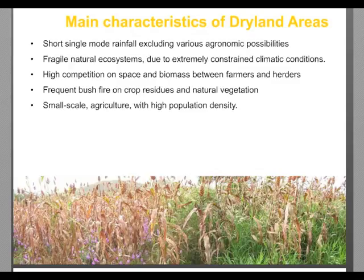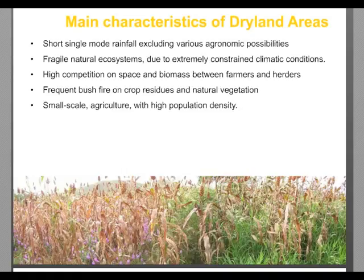Talking about dryland areas, the main characteristics are short single-mode rainfall, which excludes various agronomic possibilities. We are not in a humid environment, therefore we have just one single-mode rainfall. We also have fragile natural ecosystems due to extremely constrained climatic conditions, and there is a high competition on space and biomass — a high competition between farmers and herders on crop residues.